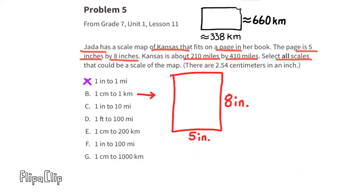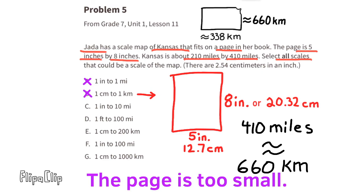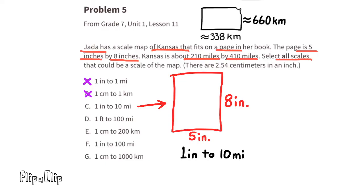Scale b: one centimeter to one kilometer. Five inches is equivalent to 12.7 centimeters, and eight inches is equivalent to 20.32 centimeters. Kansas is 210 miles by 410 miles, and 410 miles is approximately 660 kilometers. With a scale of one centimeter to one kilometer, this page would be way too small — it would need to be at least 660 centimeters tall.